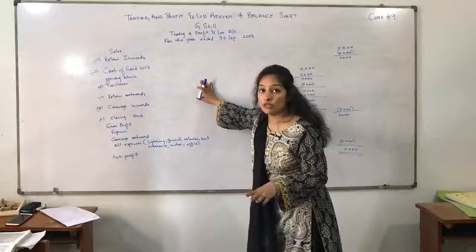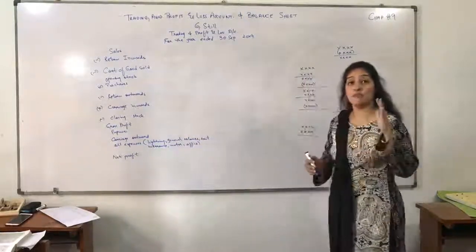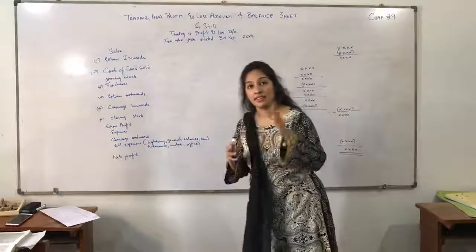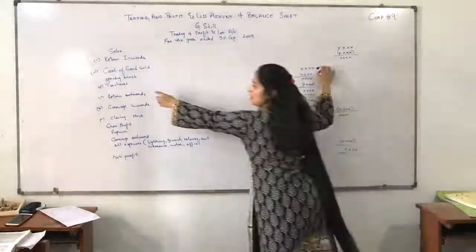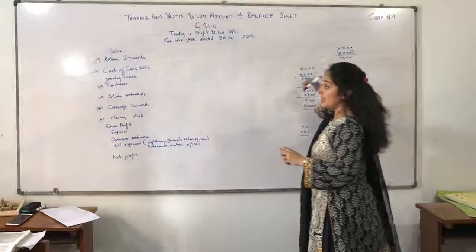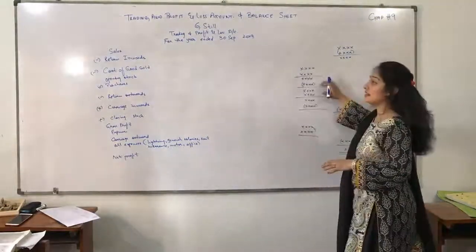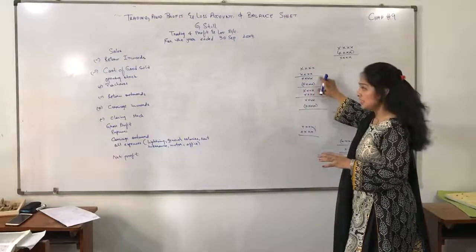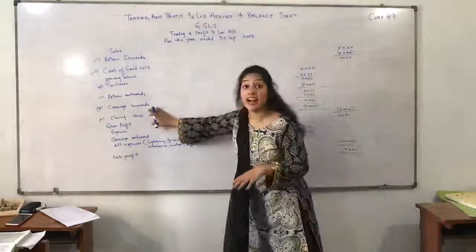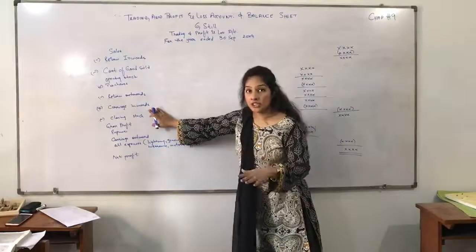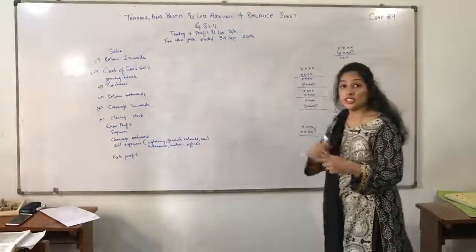Under the Cost of Goods Sold title, we have the Opening Stock — that is the stock which the business has at the start of the year. That will be entered here. Then we will add the Purchases in the purchases column. Then we will subtract Return Outwards from the purchases, and we will get a different amount. Then we will add Carriage Inwards, because it is a transportation cost and it is charged in the purchases department.